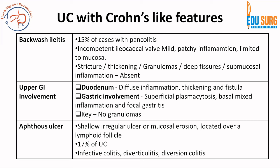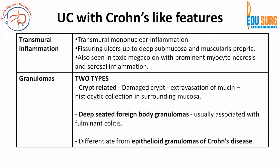These are some of the points where ulcerative colitis has Crohn's-like features. Transmural inflammation is very rare in UC, but if present, it is mononuclear, and fissuring ulcers can go deep up to the submucosa and muscularis propria. This transmural inflammation is also seen in toxic megacolon, where you will have myocyte necrosis and serosal inflammation.